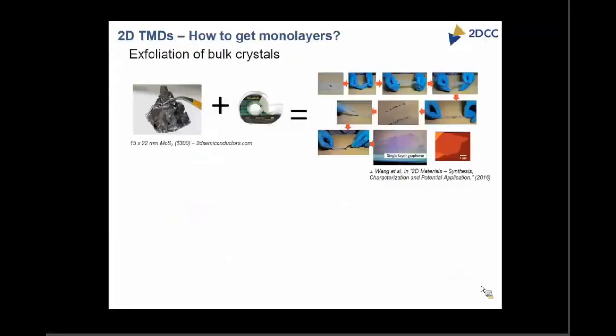The way to get to monolayer films has been very successful through exfoliation of bulk crystals — you take your bulk crystal and use scotch tape, peeling it until you get a thin layer. This is what the Nobel Prize was about. But the problem with this technique is that the size of these layers is on the order of tens of microns, so if you're talking about making wafer-scale devices, this is not the ideal process.